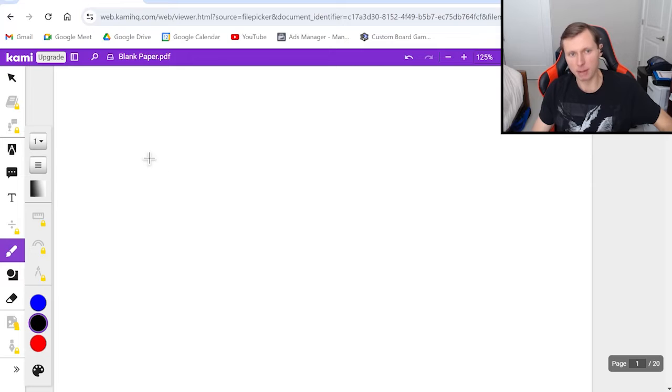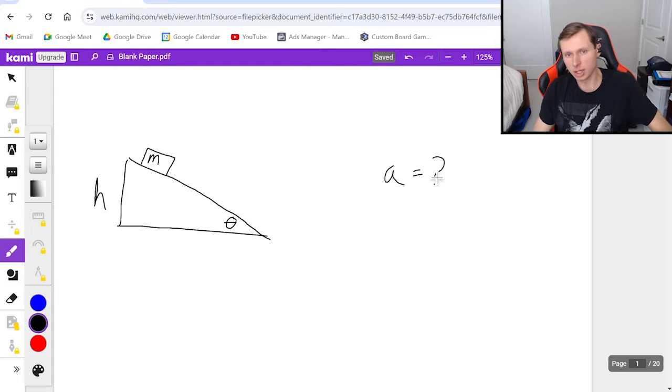So here's the setup for the problem. Let's say I have a ramp, and let's say I put a mass on it with mass m with the ramp having angle theta, the ramp has a height h, and ultimately my question is I would like you to find the total acceleration of this box as it goes down the ramp.